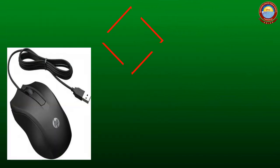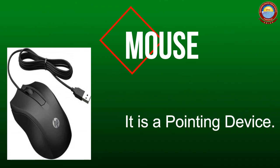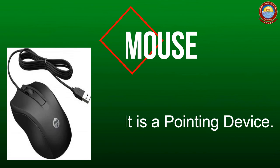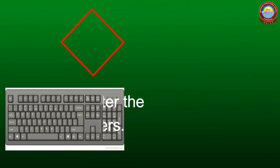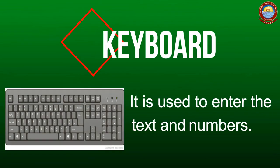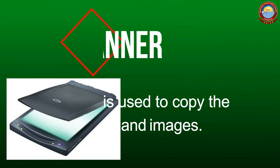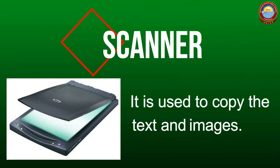Mouse. It is used to point things on the monitor. It is also used to draw pictures. Keyboard. It is used to enter text and numbers into a computer. Scanner. It is used to copy the text and images from the paper to the computer.